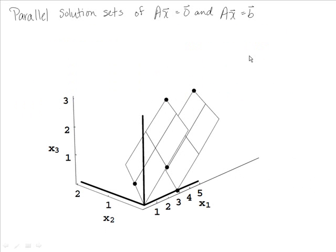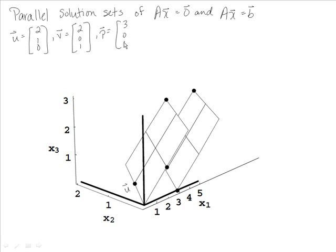Looking at parallel solution sets of the homogeneous and non-homogeneous systems: vector u is (2, 1, 0), vector v is (2, 0, 1), and vector p is (3, 0, 0). The homogeneous solution set has x2 times u plus x3 times v, forming a plane through the origin. The non-homogeneous solution is p plus x2 times u plus x3 times v — the same plane translated by p.